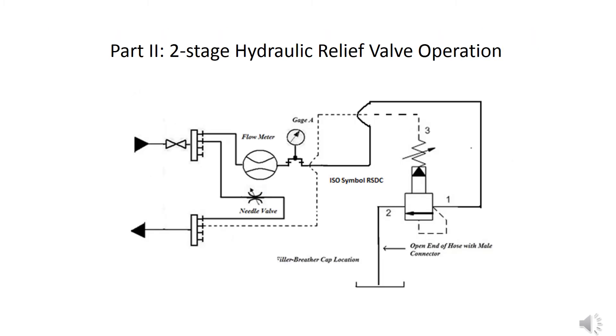This experiment is on page 120 of your lab manual. What we now have in the circuit is a two-stage or balanced piston relief valve. The schematic symbol that they used for this circuit, and for the valve itself, I should say, is the ISO schematic symbol. So some of the symbols that we use in the lab manual are older symbols. They communicate the correct information, but they are not exactly up to date. But this one is.